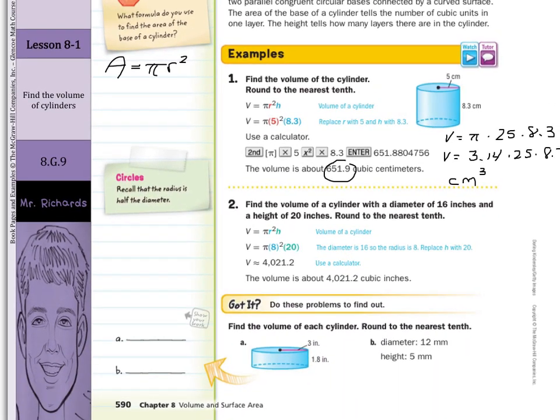Find the volume of a cylinder with a diameter of 16 inches and a height of 20 inches, rounded to the nearest tenth. Recall that the radius is half the diameter. If you're given a diameter of 16, the radius is half of that, which is 8. That 8 is what gets substituted into the formula — it's really important to use the radius, not the diameter.